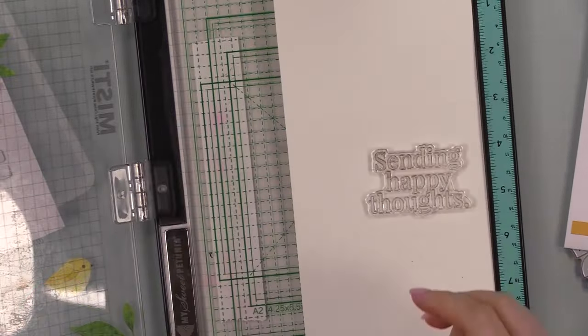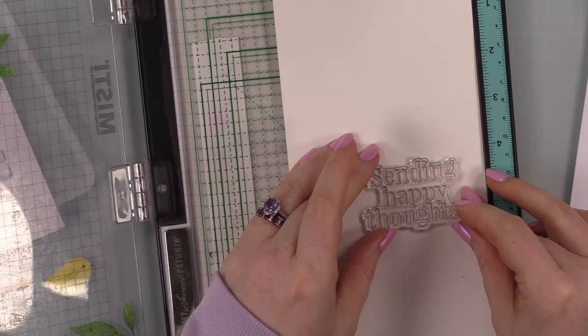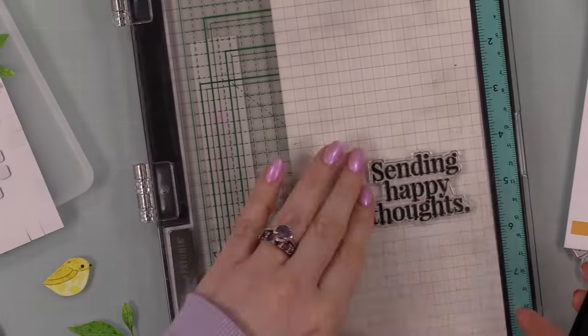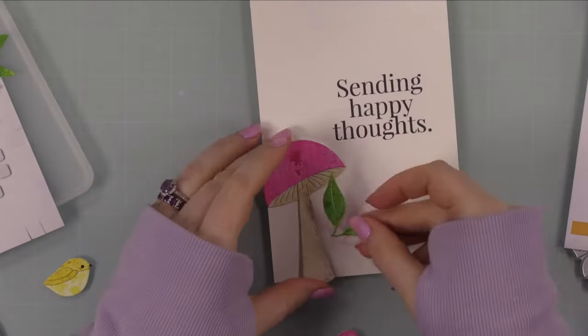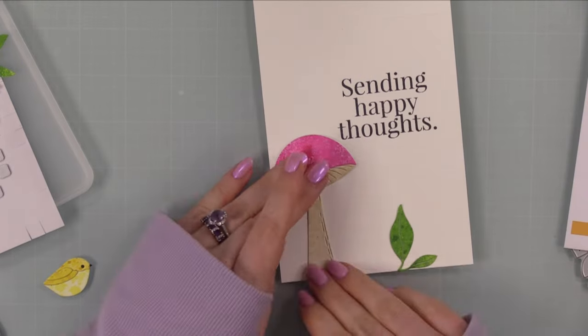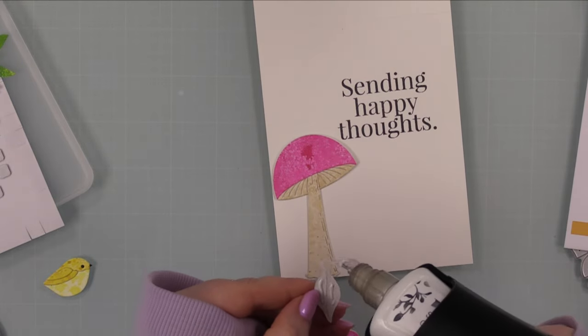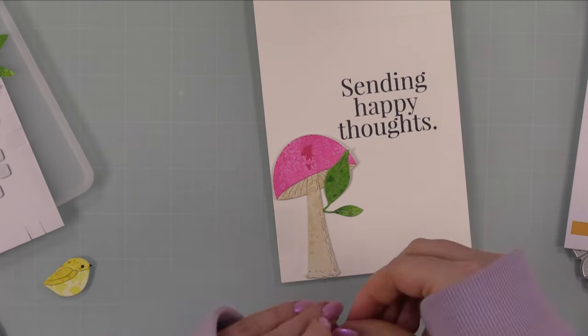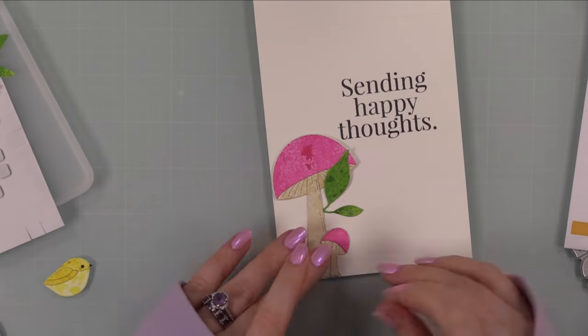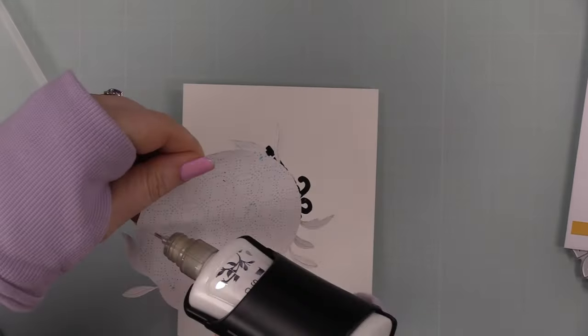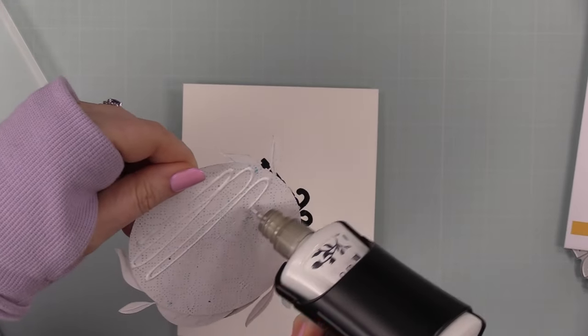I was able to use the edge of the green piece and get one more little leaf die cut out of it to put on the inside. And then for my sentiment this is another oldie but goodie, this is from the Extra Talkative set. I stamped that with black ink. I just put my card base into my MISTI, stamp the sentiment, and then I'm just adhering these remaining little die cuts onto the inside of the card. Once I get these adhered into place I can then adhere the circle scene that I had created.